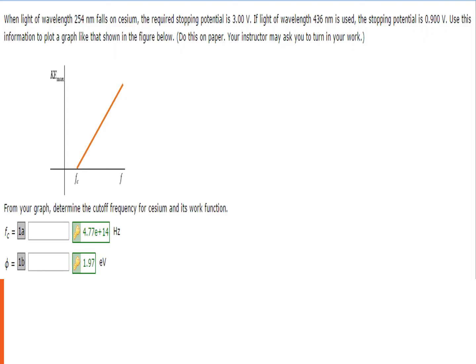It reads: when light of wavelength 254 nm falls on cesium, the required stopping potential is 3 volts. If the light of wavelength 436 nm is used, the stopping potential is 0.9 volts. Use this information to plot a graph as shown in the figure below, and from your graph, determine the cutoff frequency for cesium and its work function.